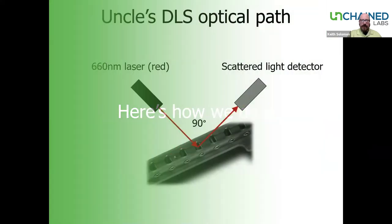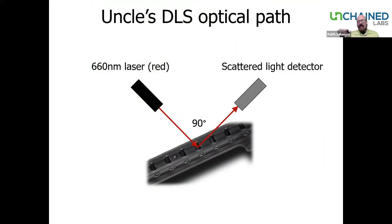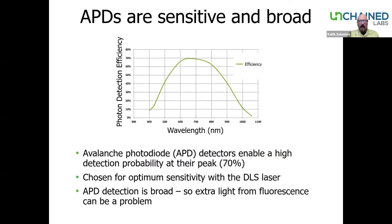So how do we do it at Unchained Labs? We have a 660 nm laser with our avalanche photodiode at a 90-degree angle. We don't have to worry about separating incident light from scattered light because we have a right-angle detector. Avalanche photodiodes are used in the industry because they have fantastic integration speeds and wonderful photo efficiency — around 70% or even higher. They're very sensitive and can be configured to be particularly sensitive for red lasers, making our APD work perfectly well for a 660 nm laser.